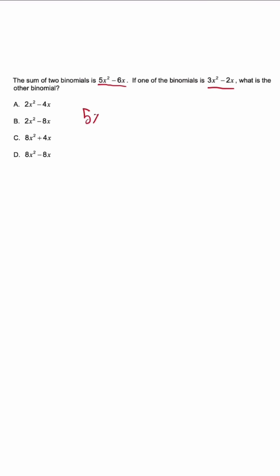So if we have this binomial 5x² - 6x and I'm subtracting another binomial, that means that I need to apply that negative sign to both terms. What a lot of students are going to do is come in and write the problem just like this.